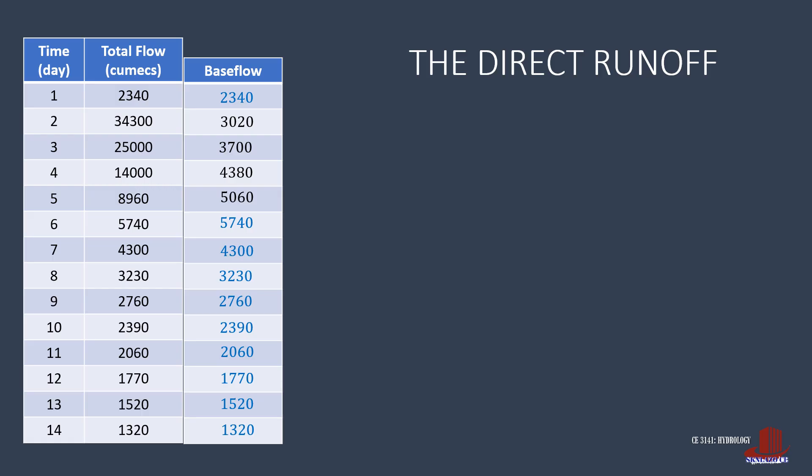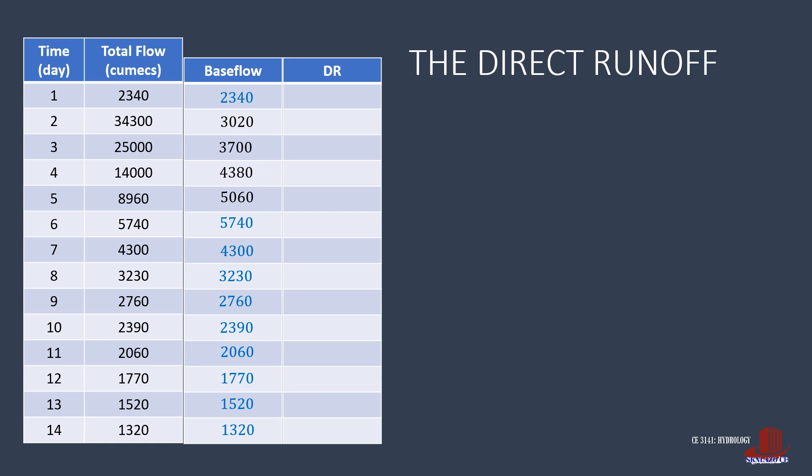To solve for the direct runoff, it is easier to tabulate the figures. For the first day, since the total flow is considered as base flow, there is no direct runoff. The second day has a total flow of 34,300, and base flow of 3020 is subtracted, giving 31,280 direct runoff. For the third day, DR is computed as 25,000 less 3700, giving 21,300 cumecs. The fourth day has DR of 14,000 minus 4380, or 9620 cumecs. The fifth day has DR of 8960 minus 5060, that is 3900 direct runoff. From day 6 to 14, the total flow is solely transformed to base flow, which means there is no yield for direct runoff.